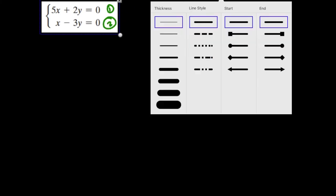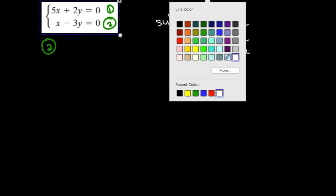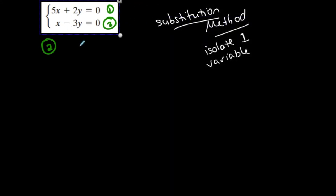So notice that in equation 2, I can isolate the variable x by adding 3y to both sides.